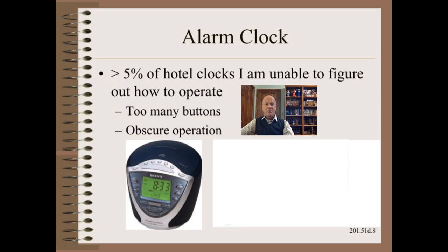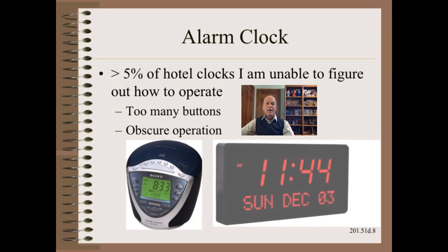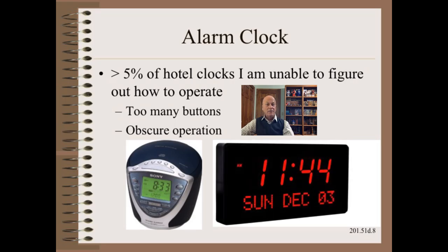Before you say, why not just use your iPhone? Well, I do, but that is not good enough because there is a chance of mis-setting it, such as getting the AM/PM selection wrong or any other number of failure modes. Thus, I always set two alarms: iPhone and hotel alarm clock. The problem is I can't figure out how to run at least five percent of the clocks, even with as much or more experience than most of you would have. Shown here is one such 20-button beauty that has eluded me for years. However, even the seemingly simple one on the right has a problem — it is not simple. It requires a 20-button remote to operate, and remotes are not very reliable and are always getting lost.